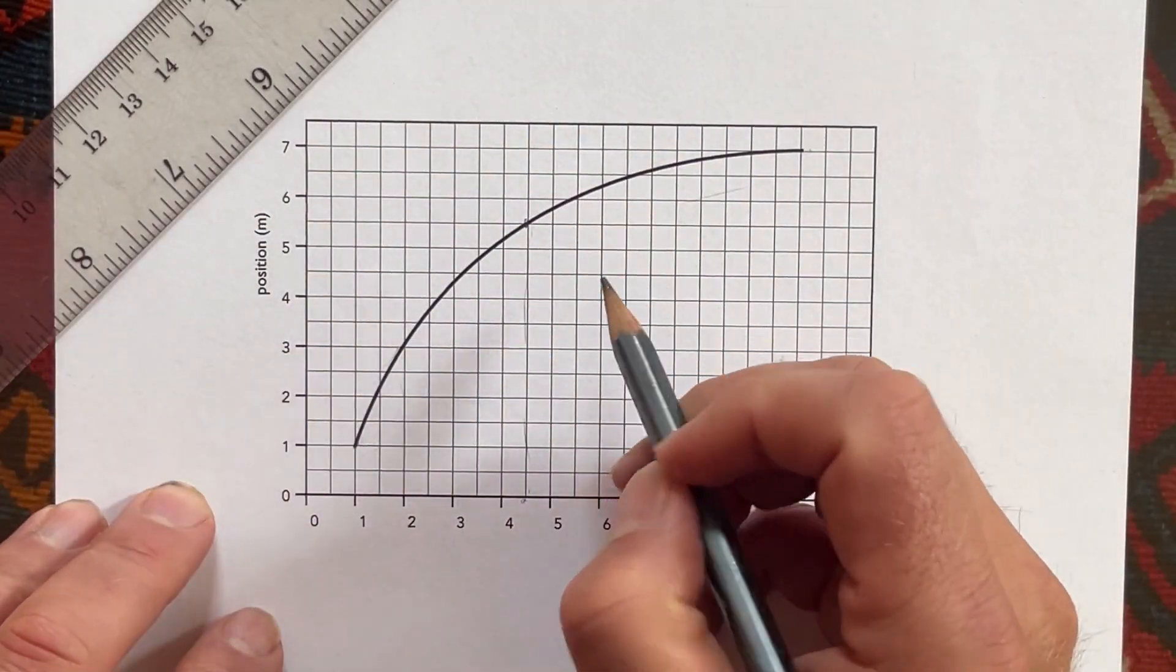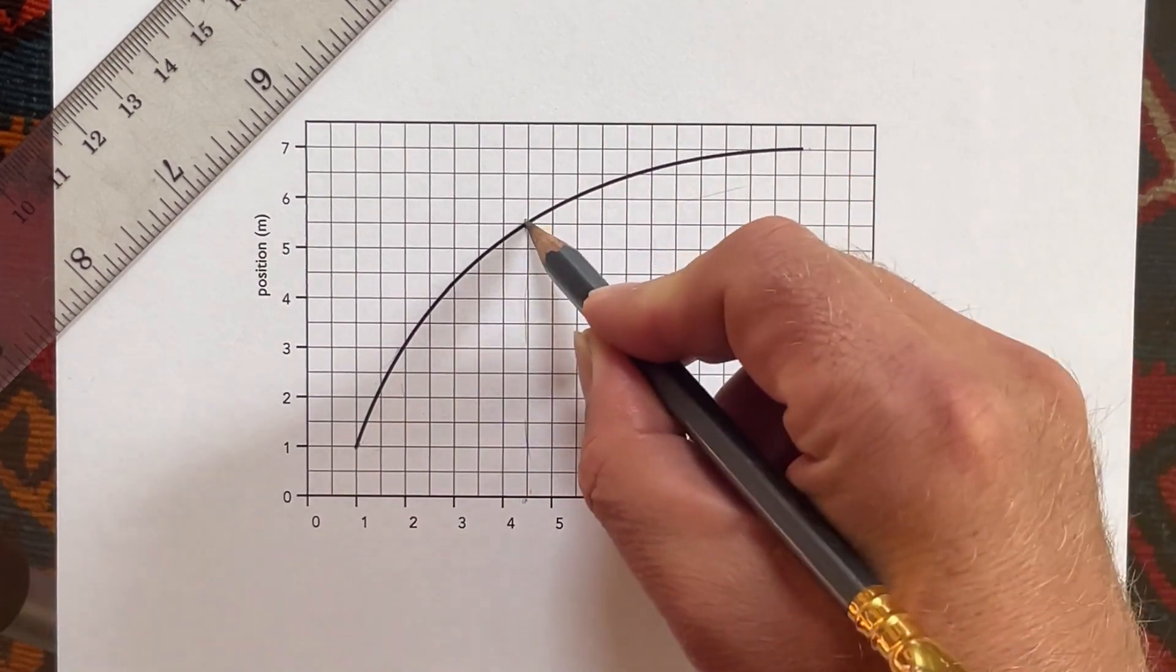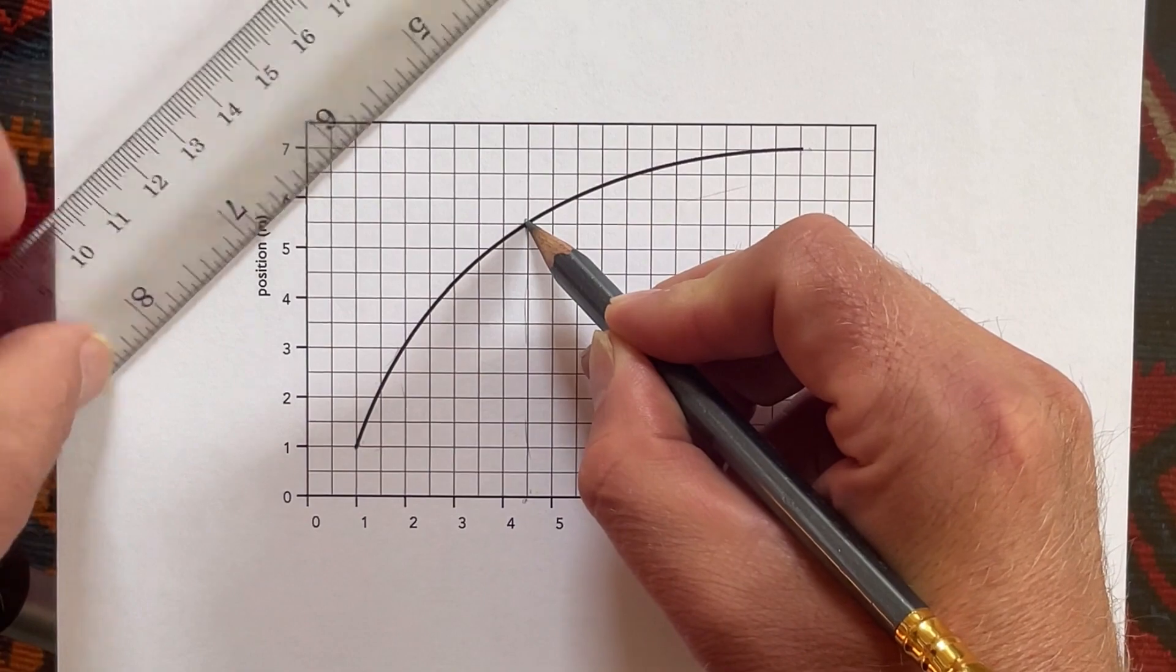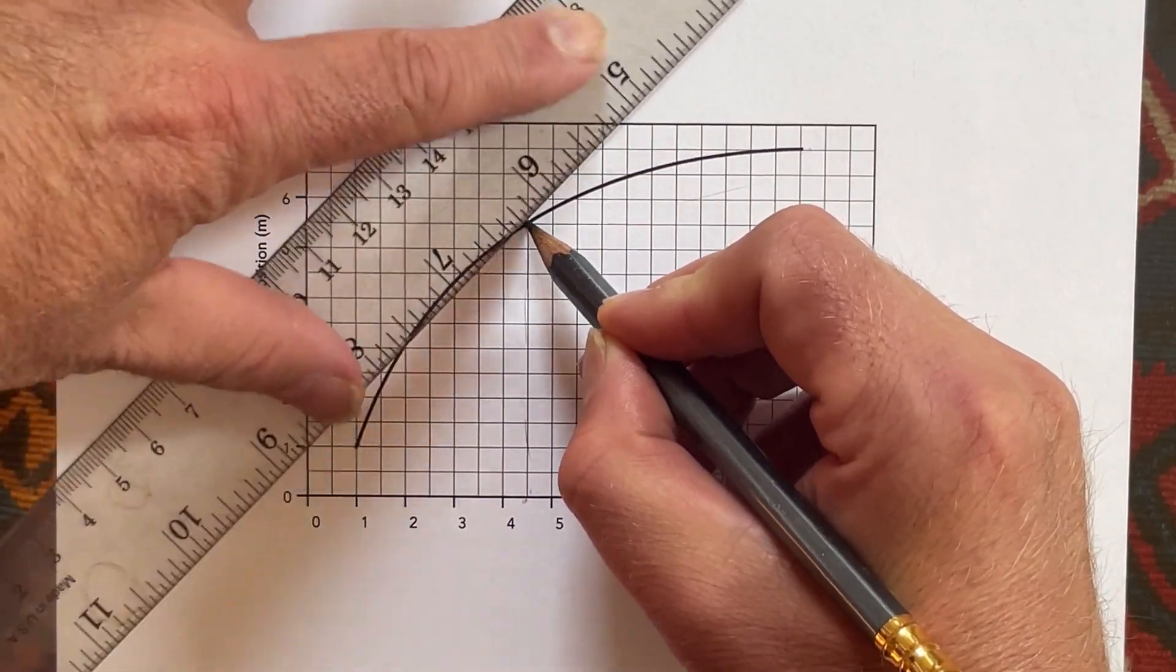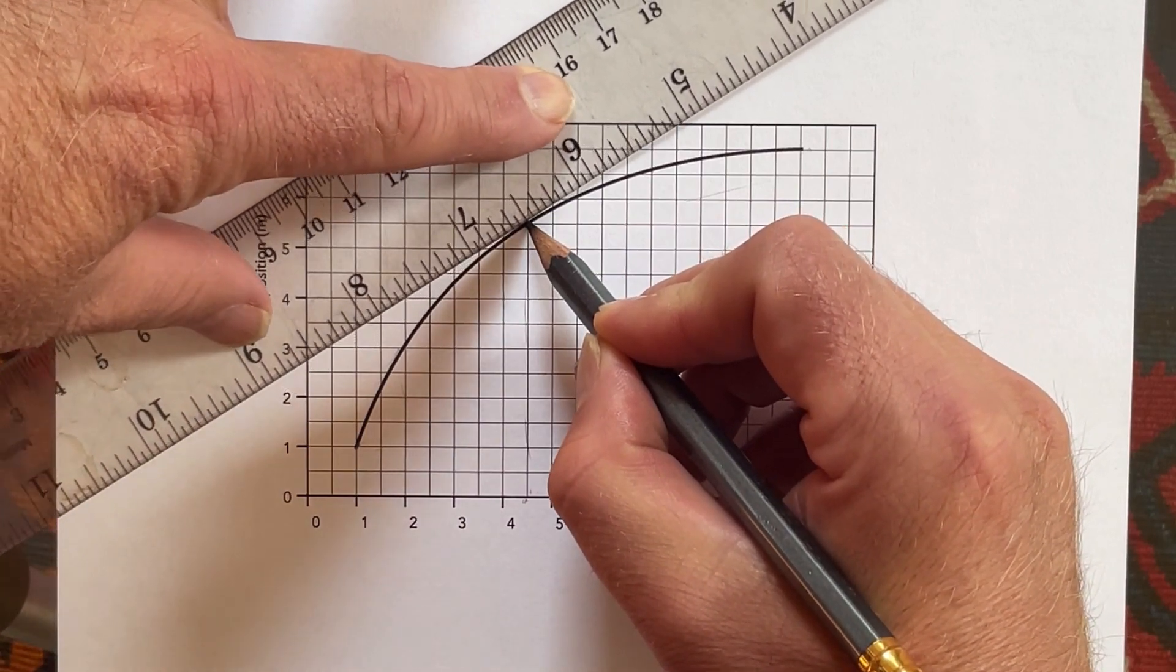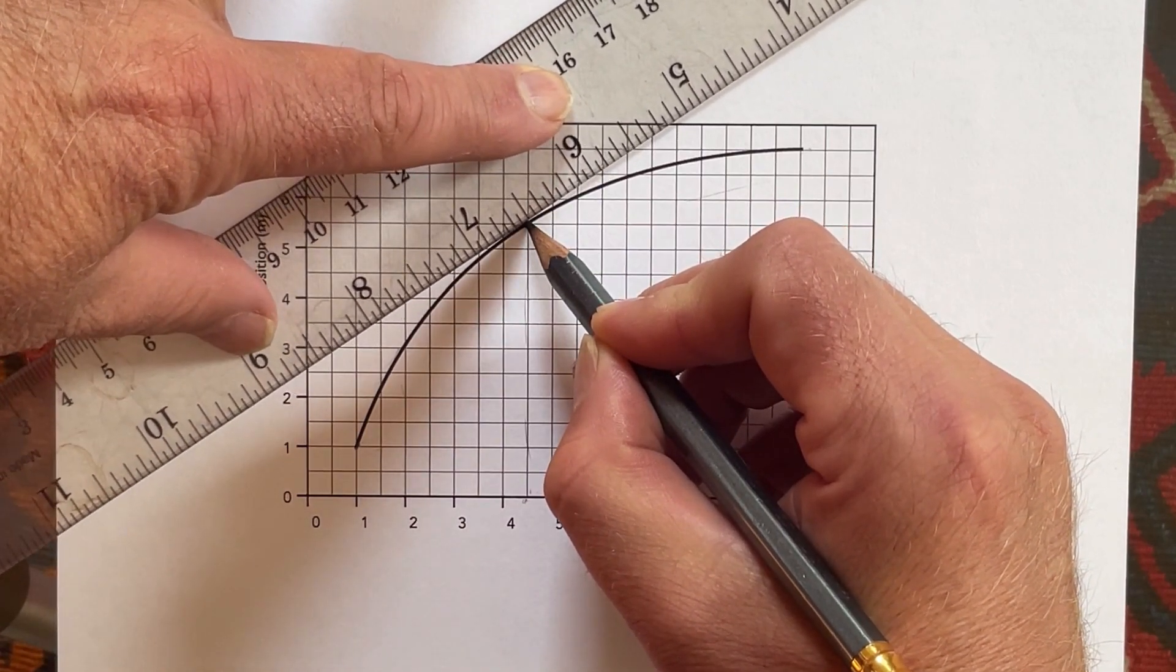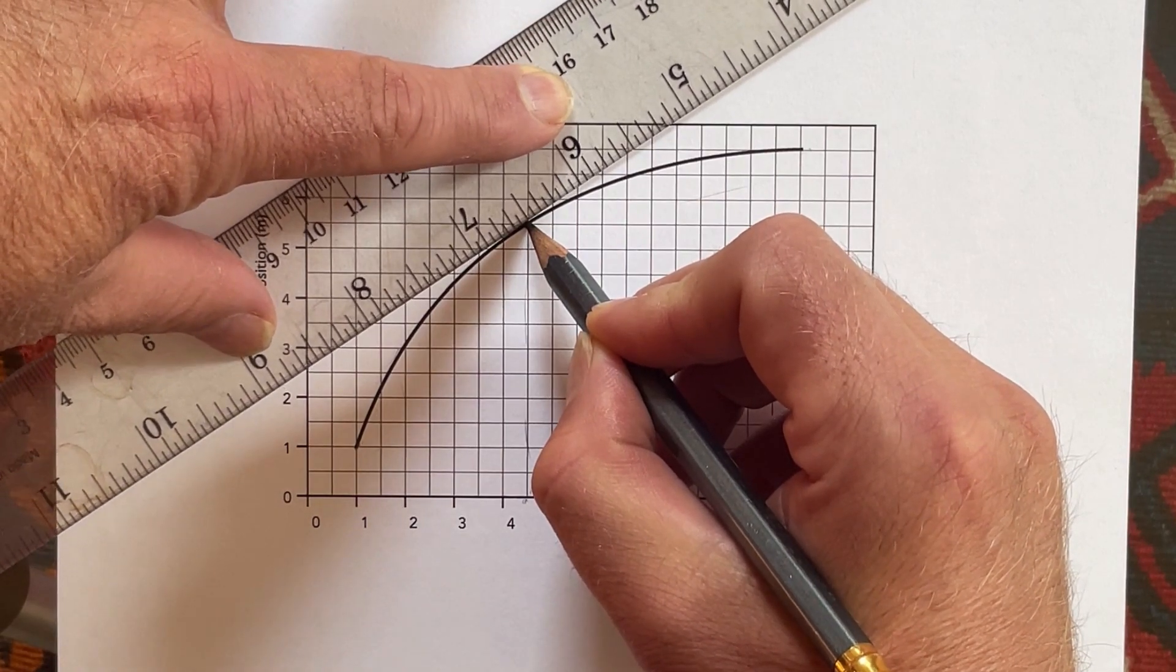One suggestion I have is you take your pencil and you put it on the point that you want to find the velocity for. You hold the pencil right there because it's a good thing to put your ruler up against. So I'm going to put my ruler up against it and I'm going to rotate the ruler around until the ruler looks like a nice tangent. So it looks like it really represents the slope of this curve right here. I'm going to say that's it.